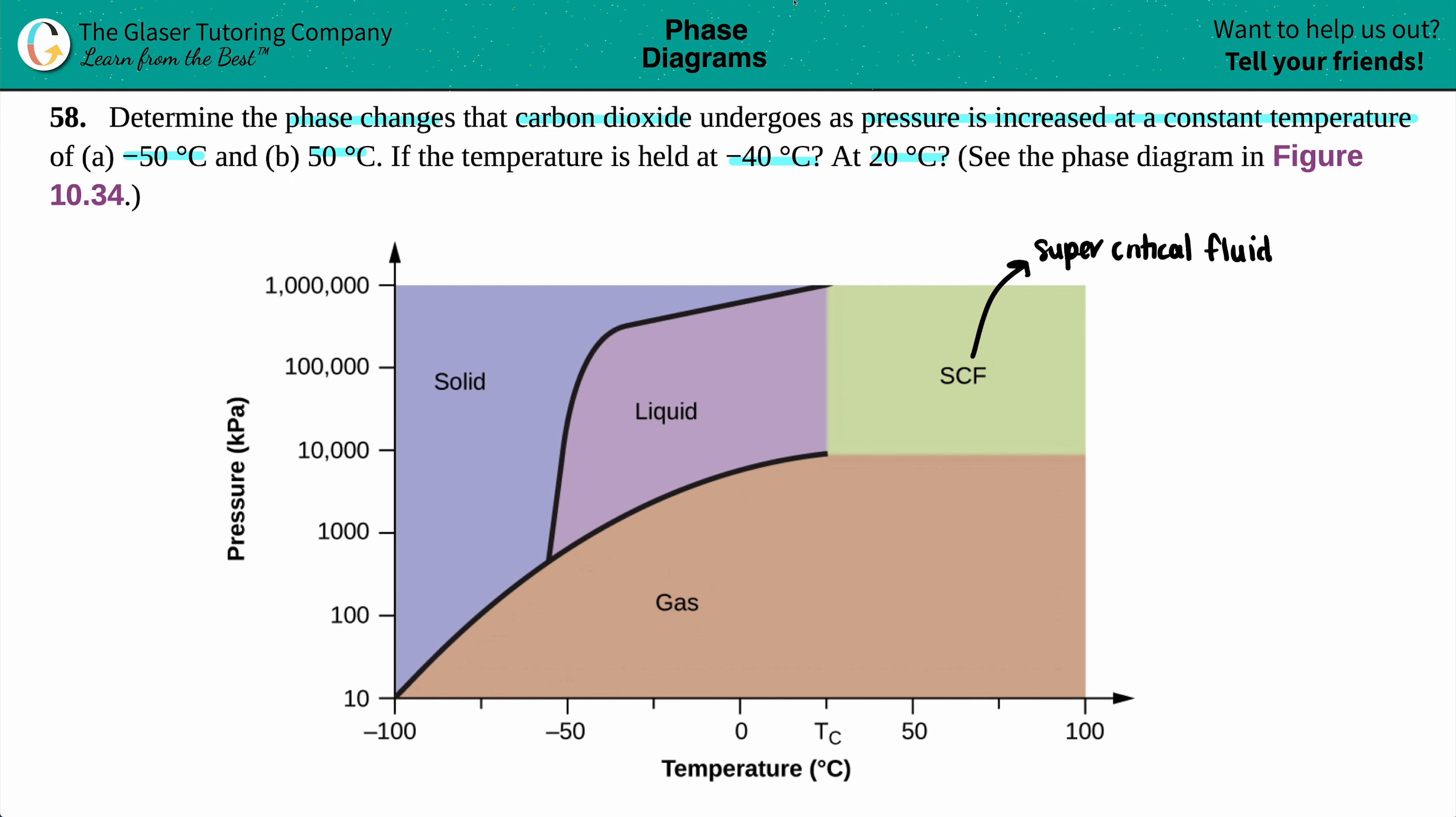The first temperature we have to find out is what's going on at negative 50 degrees Celsius. This question said we're going to increase in pressure. The pressure in kilopascals is the y-axis. So we're always going to be looking from bottom to top because we want to figure out what's going on as pressure is increasing. Let's find negative 50. Temperature is the x-axis, degrees Celsius, so everything's good here. Here's negative 50. I'm just going to draw a line straight up. And watch the phase changes. Remember, we're going from bottom to top. In the beginning, carbon dioxide is in the brown phase, so that means it's starting off as a gas.